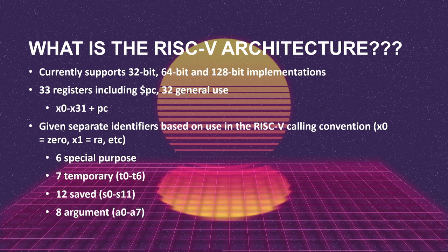The registers are given different names based on their purpose. For example, x0 is the zero register, which means its value is always zero. x1 is the return address register, and so on. You can interchange these — when writing assembly, you can write x0 in place of zero, or RA in place of x1. You have six special purpose registers: your stack pointer, frame pointer, PC, return address, etc.